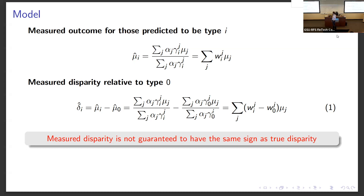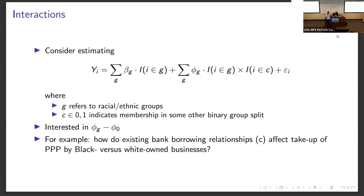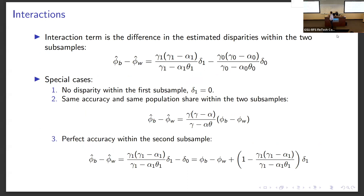We can also think about interaction terms — essentially cross-sectional variation in disparities. An example would be running a regression of some outcome, in our case PPP take-up, on racial dummies and their interactions with whether a firm has previous bank relationships. We might want to ask whether the effect of existing borrowing relationships is stronger for different groups. As long as the variable in the interaction term is a binary one, the interaction term in this kind of regression is going to be the difference in the estimated disparities within the two subsamples — the subsample with existing bank borrowing relationships versus the one without.